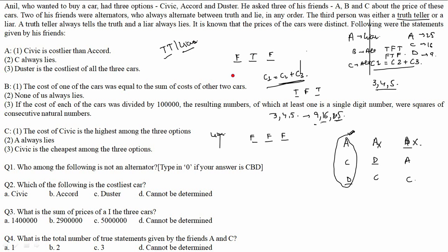We now have two valid formations. Let's answer the questions. Question 1: Who among the following is not an alternator? In Case 1, B and C are alternators (A is liar). In Case 2, A and B are alternators (C is liar). So depending on the case, either A or C is not an alternator. The answer is CBD — type 0.